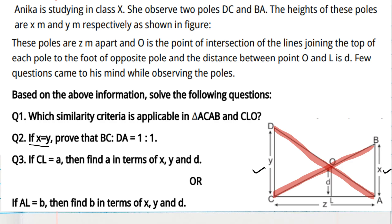To prove this, we need to use similarity again. BC is a side of triangle CAB, and AD is a side of triangle ACD. So for question 2, we consider triangle CAB and triangle ACD, because AD is a side of triangle ACD.